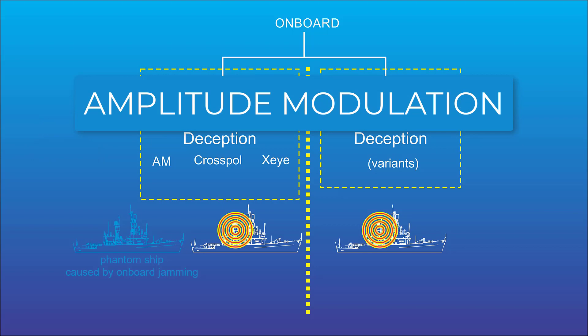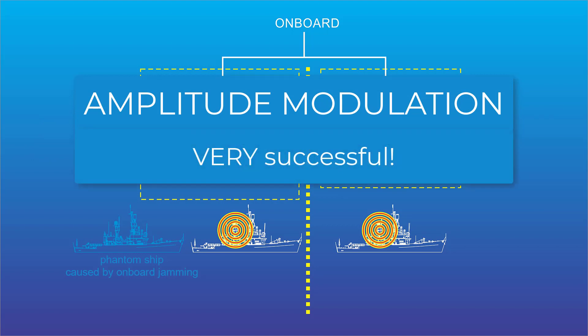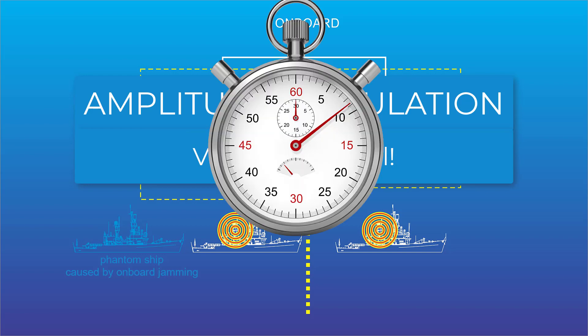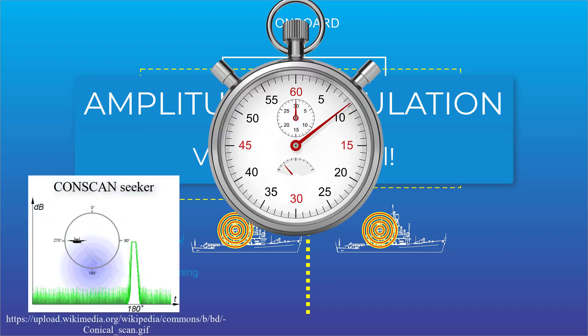Now, AM was an excellent idea, and that technique drove the early missiles crazy. They couldn't hit anything. About 15 minutes after AM appeared, the missile designers switched from conscan seekers to monopulse designs.